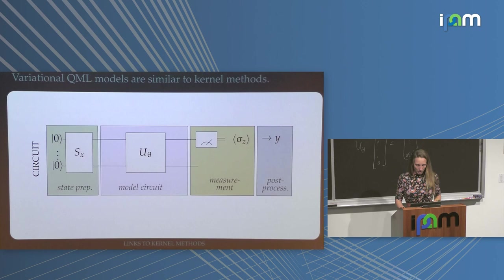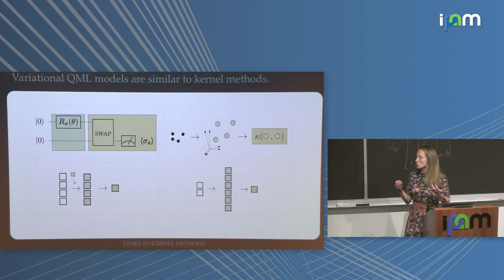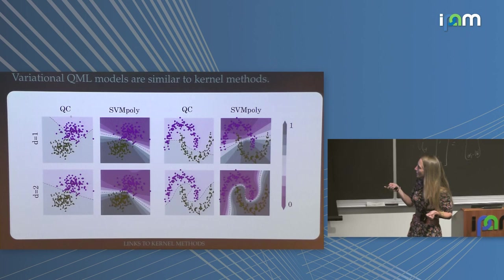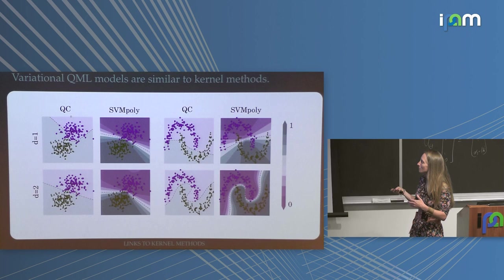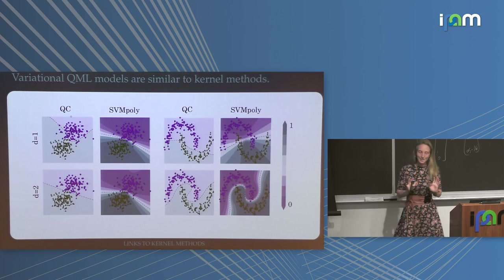You encode data, do a swap test — which measures overlaps — and you do exactly the same thing. We plotted a quantum circuit classifier — something that uses quantum kernels — and a support vector machine to show that the decision boundaries look quite similar. You have to be careful with the dimension of your polynomial kernel because of the non-linearity in the measurement, but it seems that quantum circuits and SVMs are in some sense related.